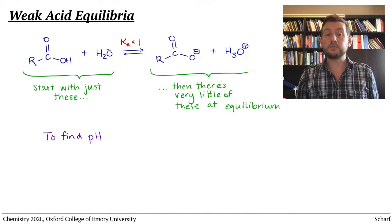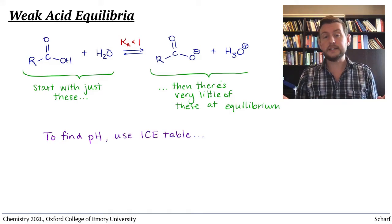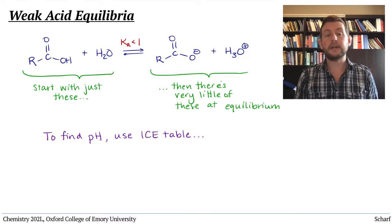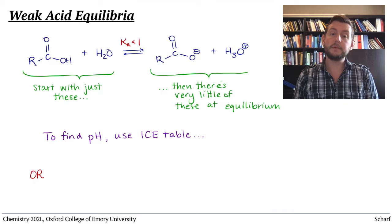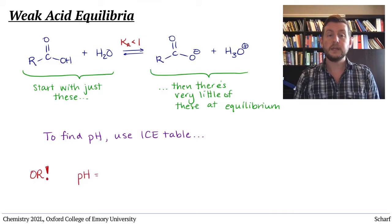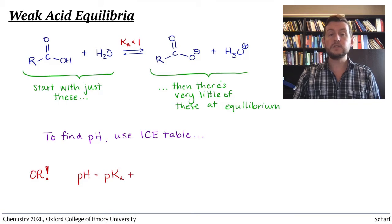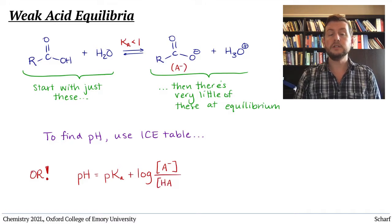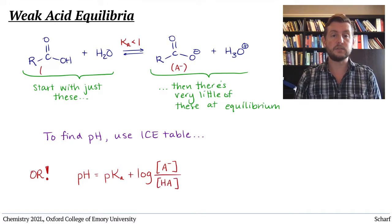In order to find the actual pH, we'd construct an ICE table, and if we know the initial concentration and the Ka of the acid, we could figure it out. Another way to determine the pH of the solution is to use the Henderson-Hasselbalch equation, which tells us that the pH of the solution is equal to the pKa of the acid plus the log of the conjugate base concentration divided by the conjugate acid concentration.